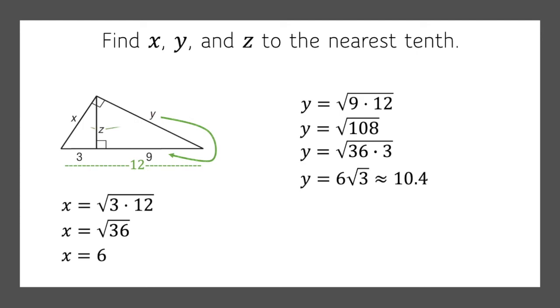Now what about Z? Z is the geometric mean of 3 and 9. So I'll multiply 9 times 3, get 3 times the square root of 3, which is approximately 5.2.